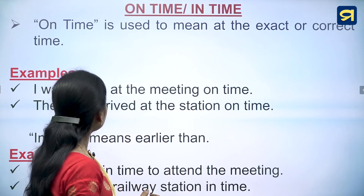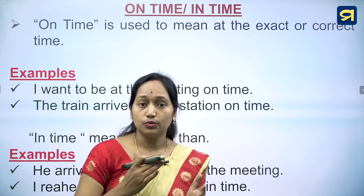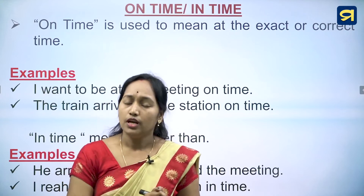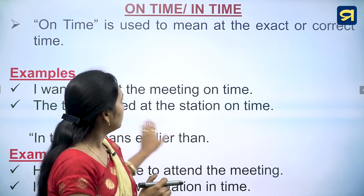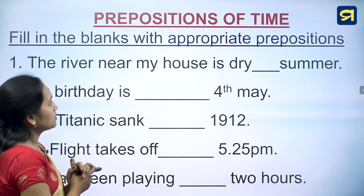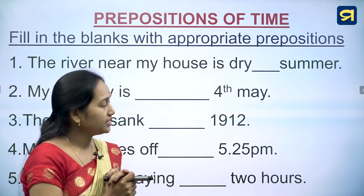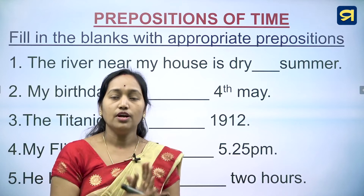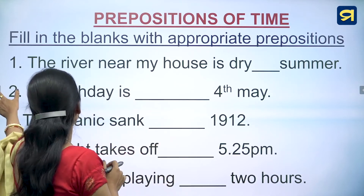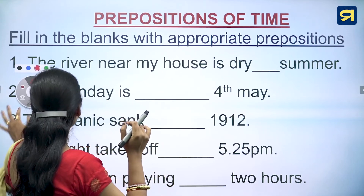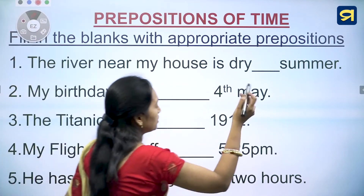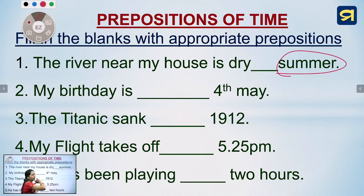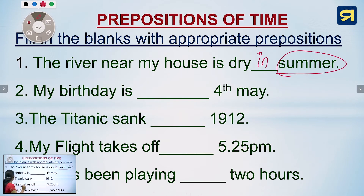Now let us go for a test. Fill in the blanks with appropriate prepositions. Question 1: The river near my house is dry ___ summer. Answer: in summer — because 'summer' is a season, so we use 'in'. Question 2: My birthday is ___ 4th May. Answer: on — because it is a specific date.